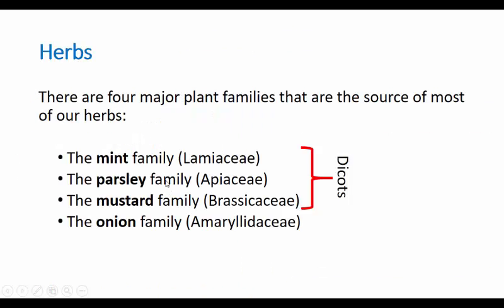We're going to talk about four major families. In taxonomy, family sits right above genus and species — but we'll just talk about them as groups. The mint, parsley, and mustard families are all dicots, so they're more closely related to each other. The onion family is in the monocots. Right there is the beginning of talking about the relatedness of these various herbs and spices.